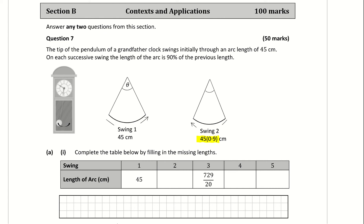On the calculator, 45 times 0.9 gives 81 over 2. You can fill these in as a decimal or fraction, whatever comes up on your calculator. For swing 3, multiply 81/2 by 0.9 to get 729/20, and so on. The fourth swing is 6561/200, and the fifth swing comes up as the decimal 29.5245. That's part 1.